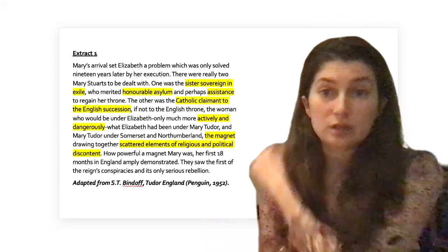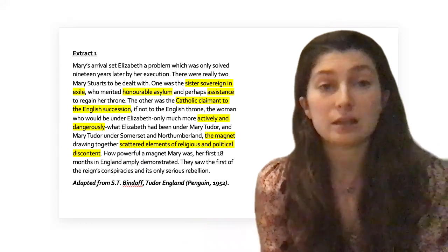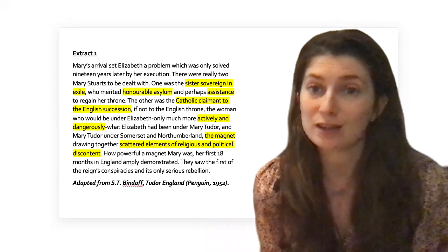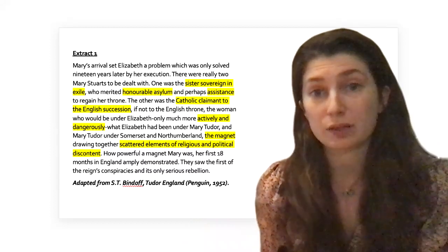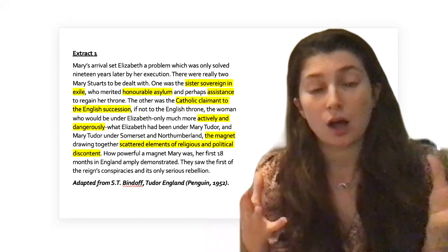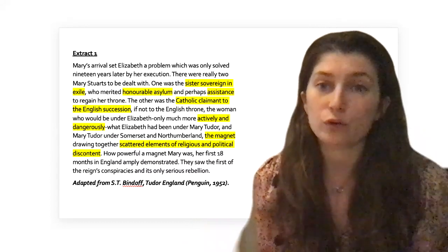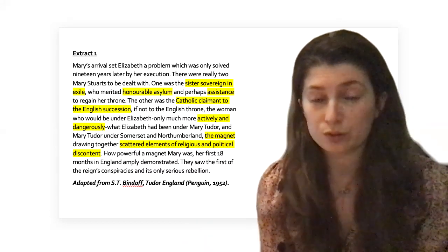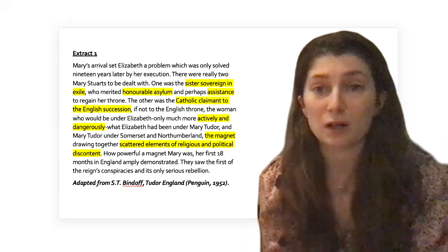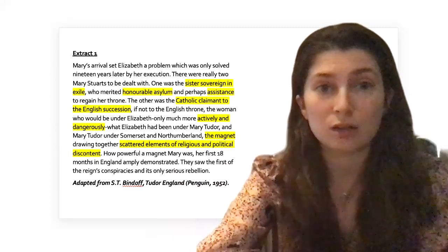Hopefully you've got some similar ideas. As you see, these are all the key points I picked out—new things I thought I'm going to want to deal with. We've got the idea that she was a sister sovereign in exile who merited honorable asylum, suggesting she needed help. The alternative idea is that she was a catholic claimant to the succession, she was active and could have been dangerous. Two ideas there: first, she was somebody who needed help; second, she was a catholic claimant to the throne.